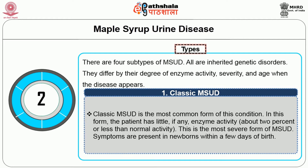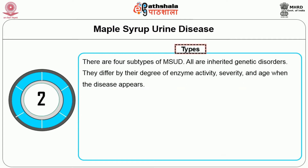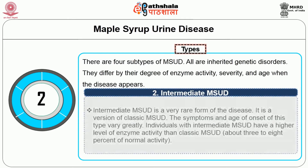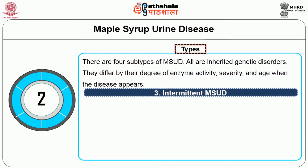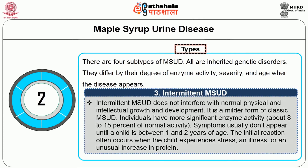The second type is Intermediate MSUD, a very rare form and a version of classic MSUD. Symptoms and age of onset vary greatly. Individuals with intermediate MSUD have a higher level of enzyme activity than classic MSUD — about 3 to 8% of normal activity. The third type, Intermittent MSUD, does not interfere with normal physical and intellectual growth. It is a milder form with enzyme activity of about 8 to 15% of normal.